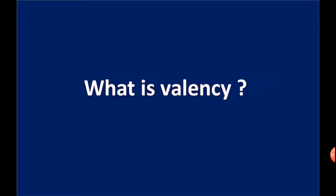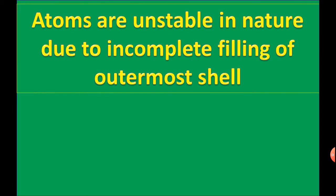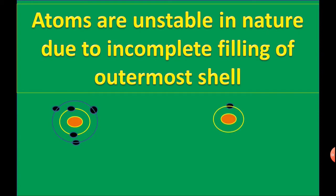What is valency? Atoms are unstable in nature due to incomplete filling of the outermost shell. For example, Boron has electronic configuration 2,3, and its outermost shell contains only three electrons, which is incomplete.